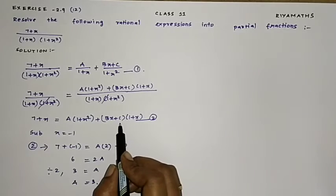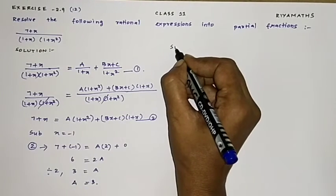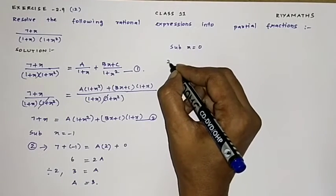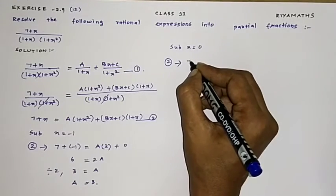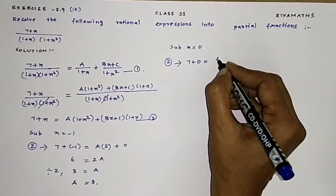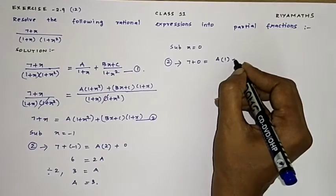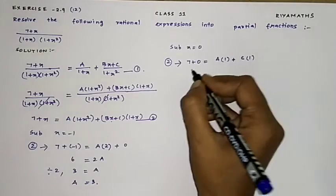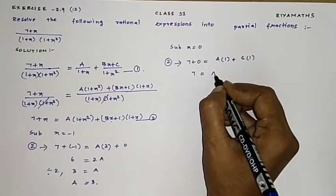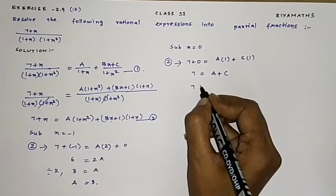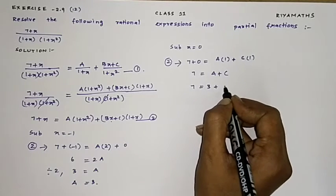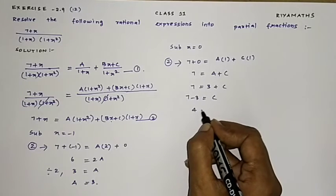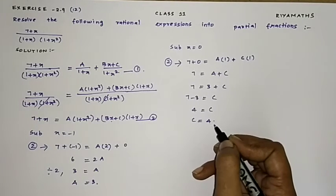Substituting X = 0 into equation 2: 7 + 0 equals A times 1 plus C times 1. So 7 equals A plus C. Since A = 3, we have 7 = 3 + C, giving C = 4. Therefore, C = 4.